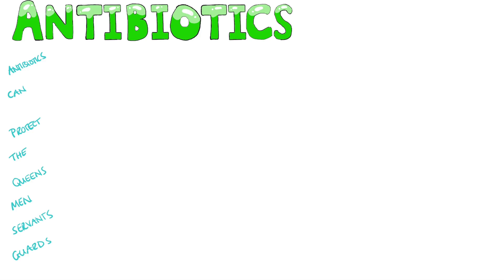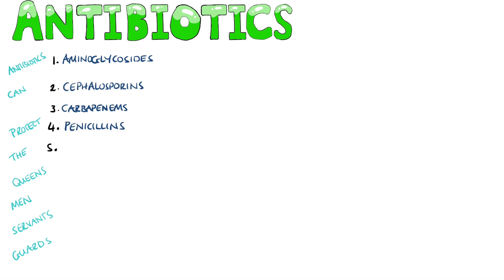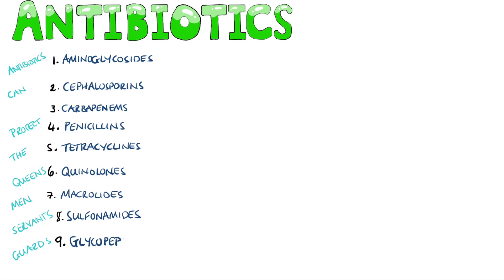The mnemonic for antibiotic classes is: 'Antibiotics Can Protect The Queen's Men Servants And Guard.' This stands for Aminoglycosides, Cephalosporins, Penicillin, Tetracycline, Quinolones, Macrolides, Sulfonamides, and Glycopeptides. A second class under C is also added: the Carbapenems. We'll run through examples of each antibiotic, their general mechanism of action and side effects, then list the most common infections by body system.